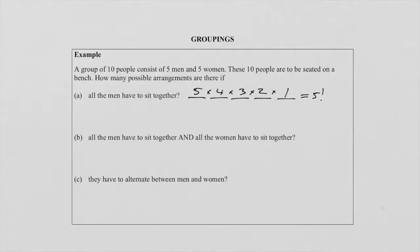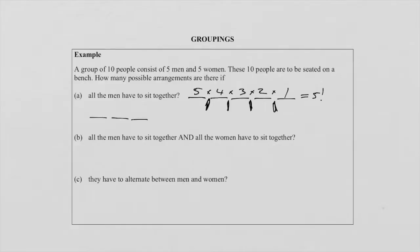Now we need to bring the five women back. The females can sit anywhere, but they can't sit between the males — they can sit on either side of the male group. So the group of five males counts as ONE unit, and together with the five females, we now have six units to arrange.